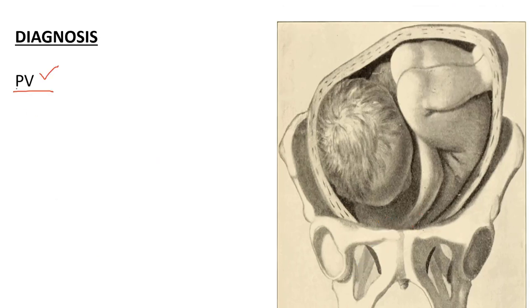On per vaginal examination, the presenting part is high, you may feel a shoulder or ribs in transverse lie, and you will not feel the head. You may feel bulging membranes or the cord, but not the fetal head.